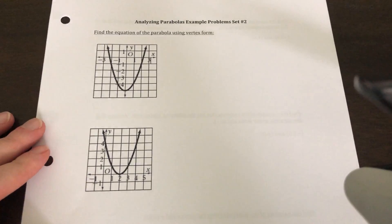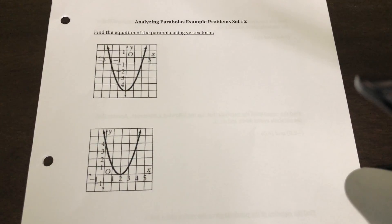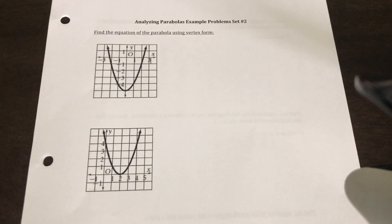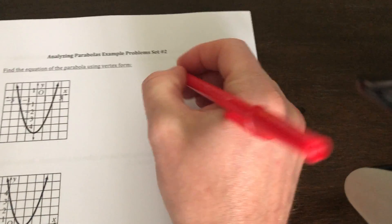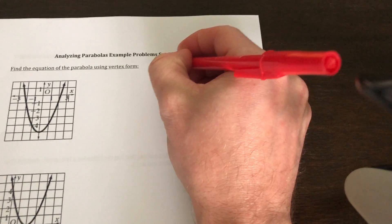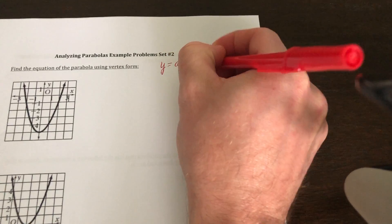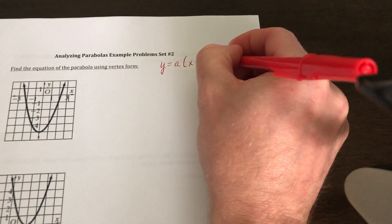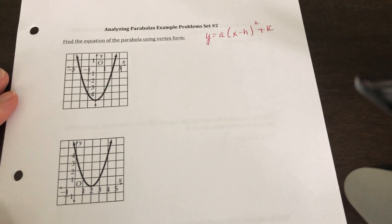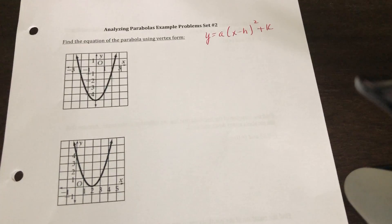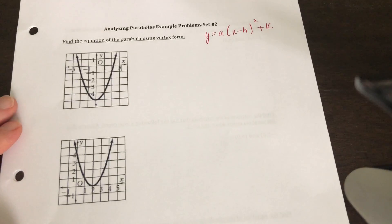This is analyzing parabolas, example problem set number two. In the last lesson we learned that the form for a parabola in vertex form was y is equal to a times x minus h, quantity squared, plus k, where hk is going to be your vertex. What we're going to do in this lesson is take a graph and find the equation of the parabola using a point.